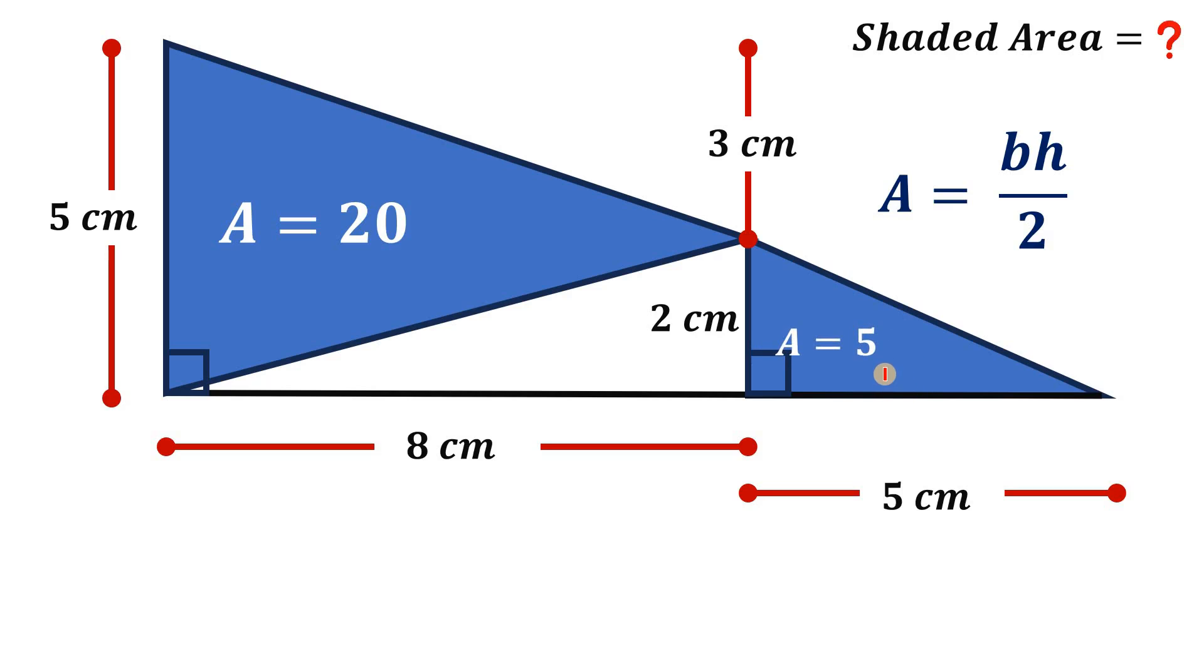So the total area of the shaded region is just 20 plus 5 or simply equal to 25 square centimeters. And that is the correct answer.